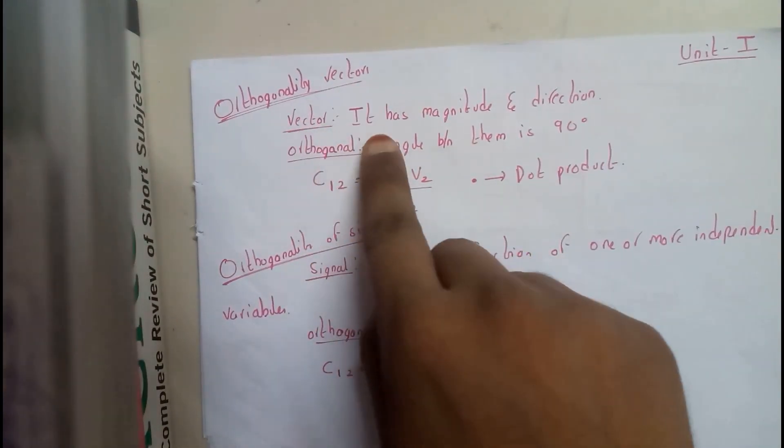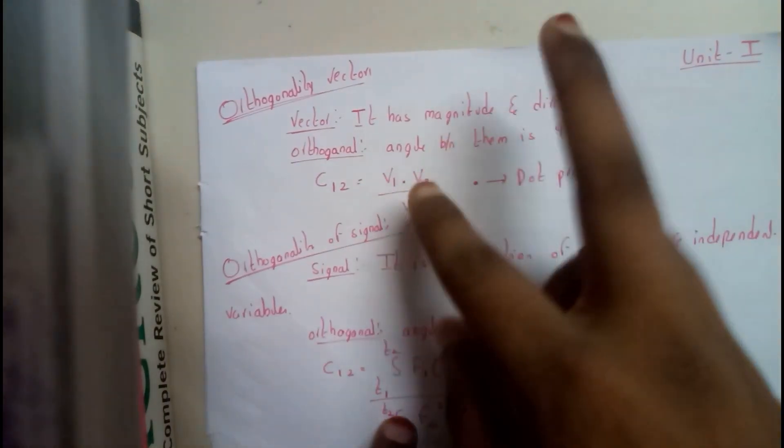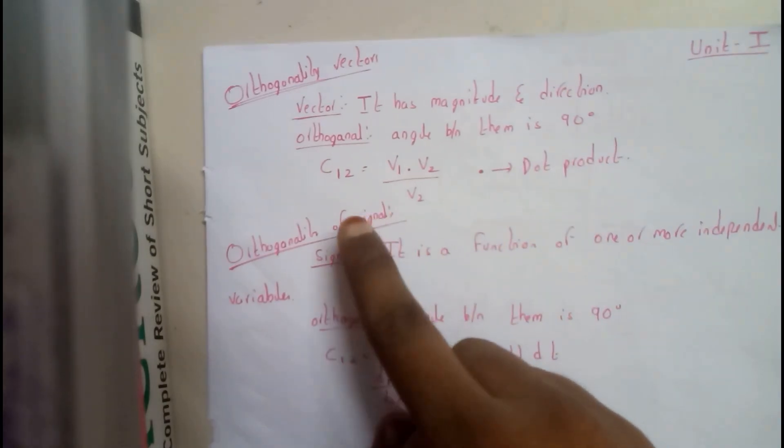What is a vector? It has magnitude and direction. Orthogonality is nothing but when the angle between two vectors is 90°, then they are called orthogonal.